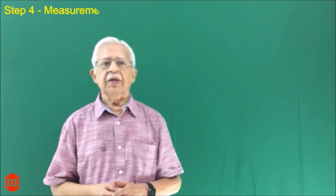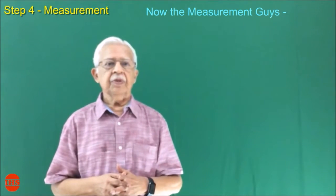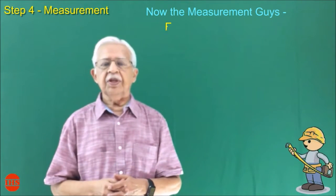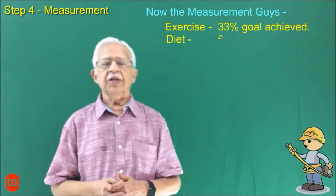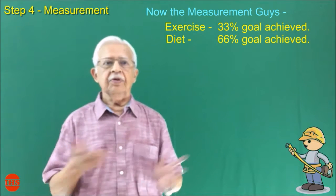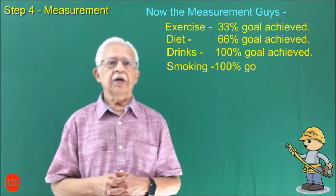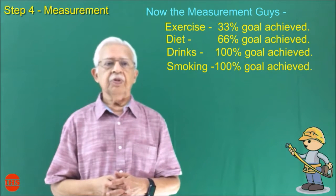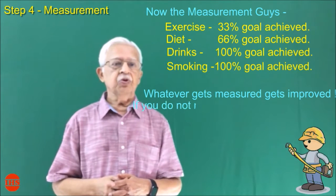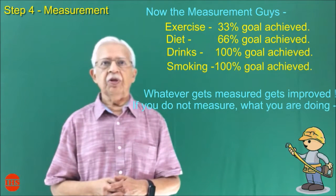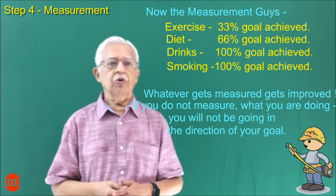Step 4: Measurement. Exercise: 33% goal achieved. Diet: 66% goal achieved. Drinks: 100% goal achieved. Smoking: 100% goal achieved. Whatever gets measured gets improved. If you do not measure what you are doing, you will not be going in the direction of your goal.